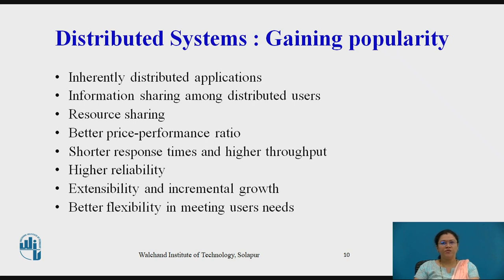Fifth, shorter response times and higher throughput — the two commonly used performance metrics are response time and throughput. Sixth, higher reliability — a system should be reliable, meaning it prevents the loss of information even in the event of a component failure. Seventh, extensibility and incremental growth — distributed systems are capable of incremental growth, as it is possible to gradually extend the power and functionality by adding additional resources. Last, better flexibility in meeting user needs — it can almost meet all user needs.